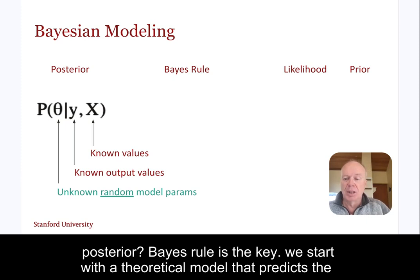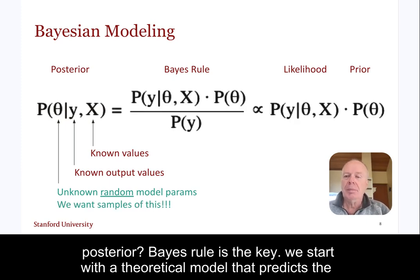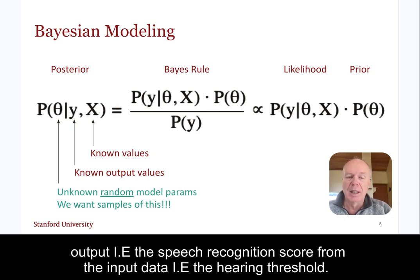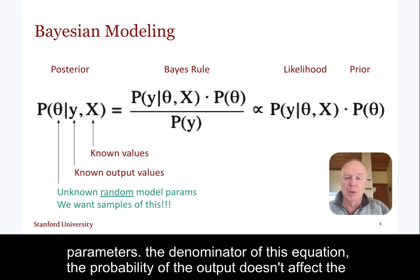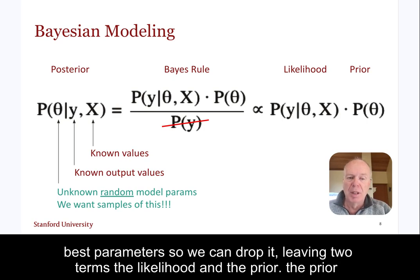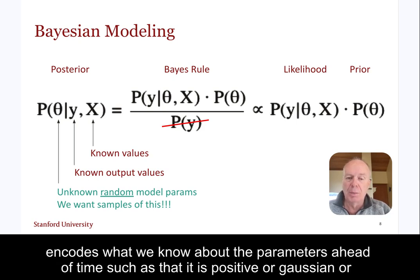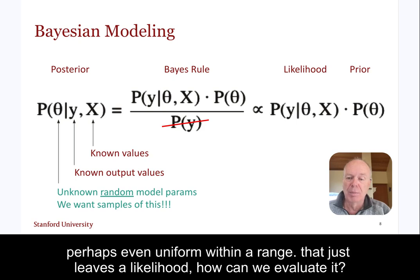So how do we calculate this posterior? Bayes' rule is the key. We start with a theoretical model that predicts the output — the speech recognition score — from the input data, the hearing thresholds. This model connects these two ideas together but often comes with a large number of parameters. The denominator of the equation, the probability of the output, doesn't affect the best parameters, so we can drop it, leaving two terms: the likelihood and the prior. The prior encodes what we know about the parameters ahead of time, such as that it is positive or Gaussian, or perhaps even uniform within a range.